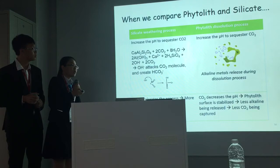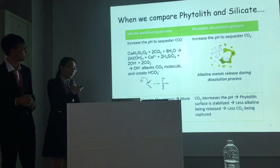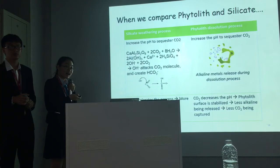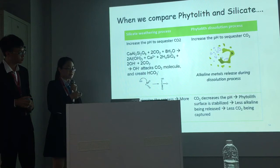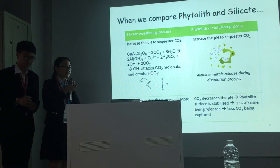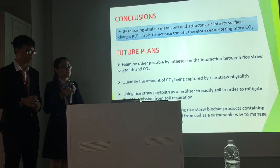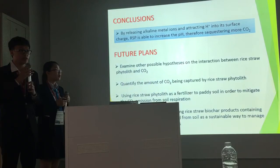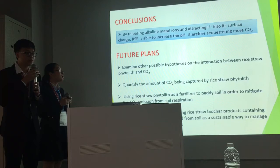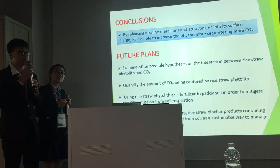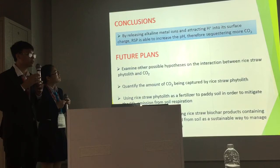We hope that our research can find out many important things about the dissolution process of biogenic silica, and that it may be very important for reducing carbon dioxide. From all the results we have obtained, we conclude that by releasing alkaline metal ions and attracting hydrogen cations onto its negatively charged surface, phytolith can increase the pH and therefore sequester carbon dioxide.